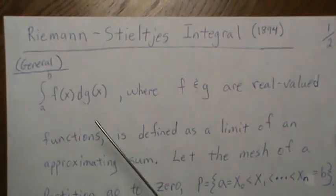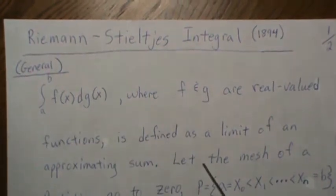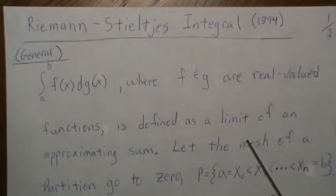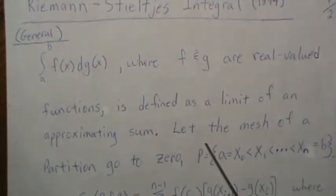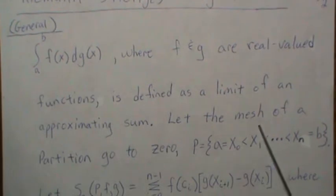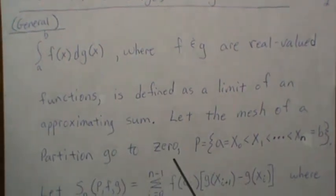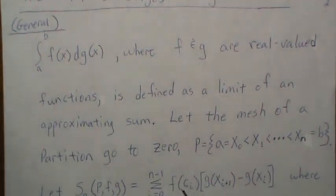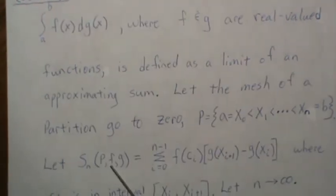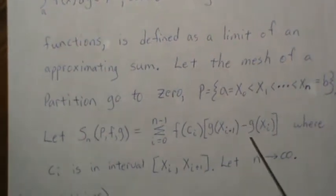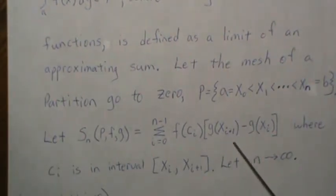f and g are real-valued functions, and this integral is defined as the limit of an approximating sum. To do that we need to create a partition and then let the mesh of that partition go to zero. This is the approximating sum.